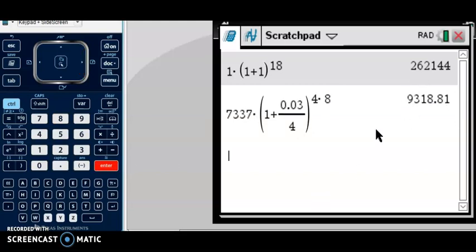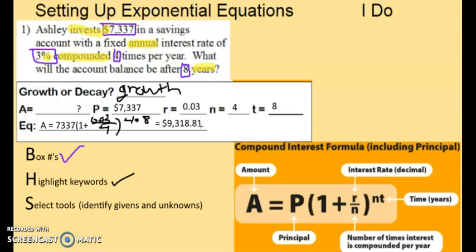This is how much money Ashley will have after those 8 years. $9,318.81. So we'll write that on our paper.